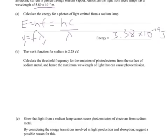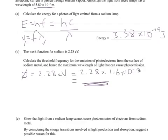So the work function is 2.28 electron volts. If we want that in joules, which we're going to have to for the calculation, it's going to be 2.28 times by 1 electron volt, which is 1.6 times 10 to the minus 19 joules.